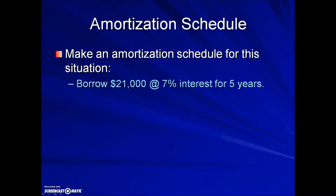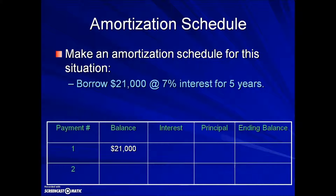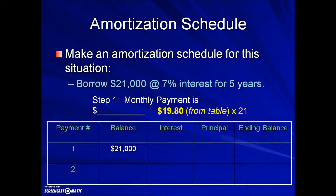In this example we're borrowing $21,000 at 7% interest for five years. Our first step to fill in this amortization schedule will be to calculate the monthly payment. We'll use the loan table to calculate this. On the loan table we'll find the intersection between the 7% interest and the five years, and from that table that value is $19.80.